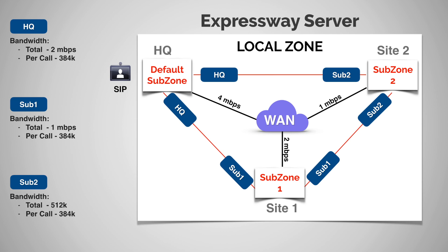Let's say we've got an endpoint at headquarters and one on subzone two. A call is going to follow the shortest path, and if that path is blocked, the call will fail. So calls go directly from the default subzone to subzone two. If I place a call at 384k, that call goes through the HQ pipe — so I deduct 384k from that two meg — then it goes through the sub two pipe, deducting 384k from the 512k allocated, leaving only 128k remaining. But that's enough, and the call connects in subzone two.